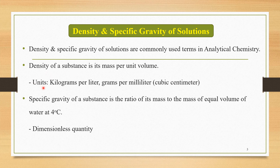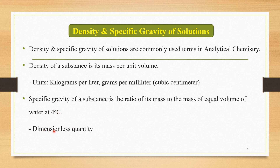Density can be expressed in units like kilograms per liter, grams per milliliter, or cubic centimeters. The second term is specific gravity. Specific gravity of a substance is the ratio of its mass to the mass of an equal volume of water at 4 degrees centigrade. It is a dimensionless quantity.